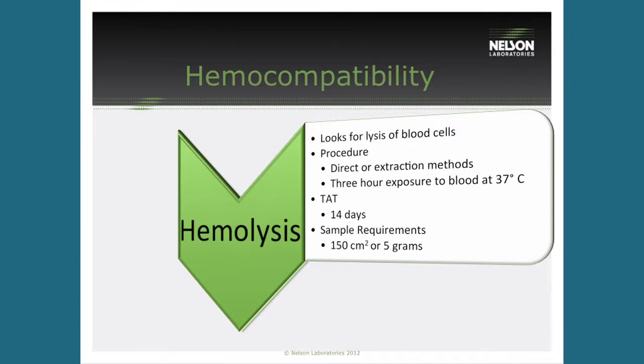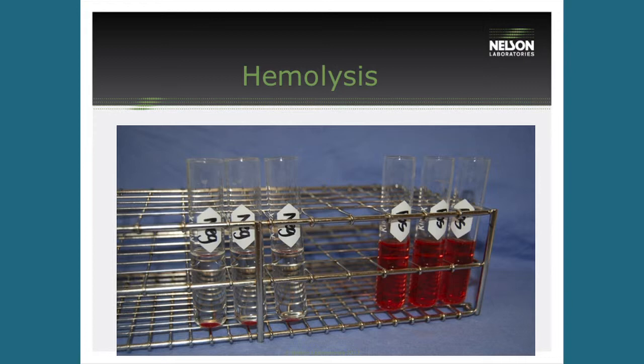By evaluating both the physical properties and the extraction, we can look at both sides of hemolysis. We take the device, put it in contact with blood cells, and look at how those blood cells interact with your device. This right here is an example of our positive and negative controls. On the right side is our negative, which is polypropylene, and on the left is our positive, which is a nitrile glove.